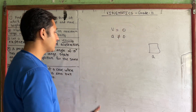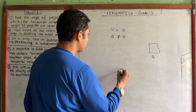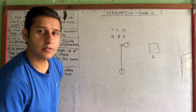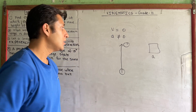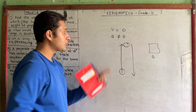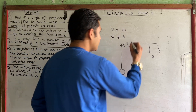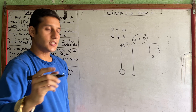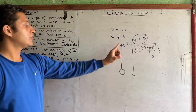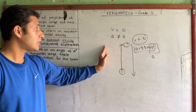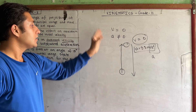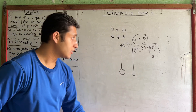The example is a ball thrown upward. At the highest point, the velocity of the ball is zero, but the acceleration due to gravity is still acting downward at 9.8 m/s². So the velocity is zero but the acceleration is not zero — this is the case. This confirms such a situation is possible.